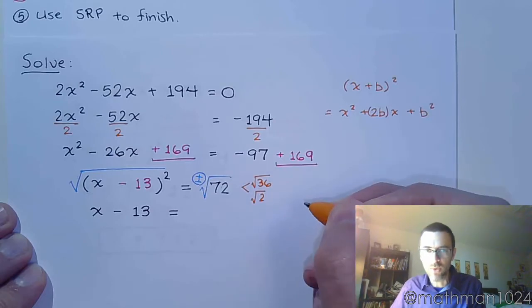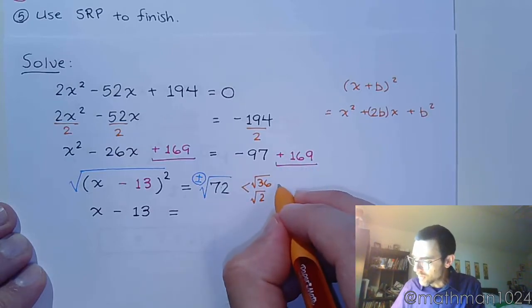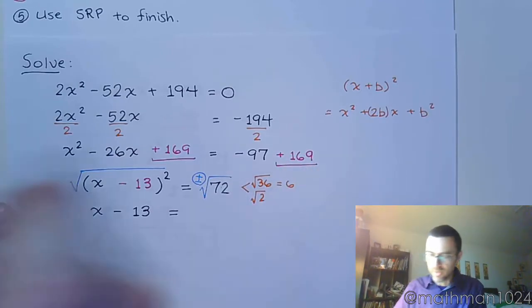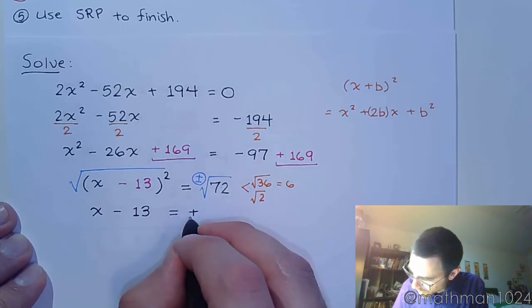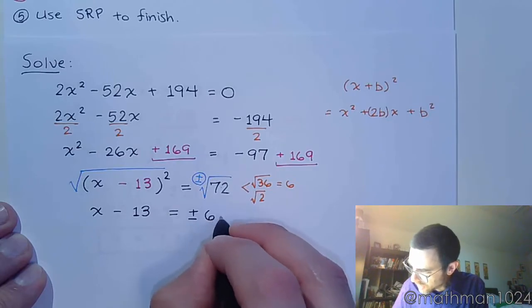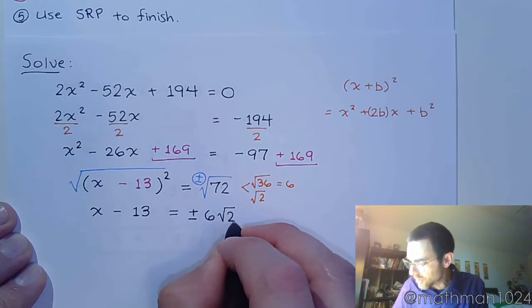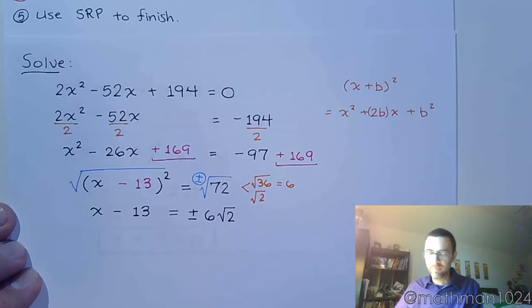Well, 72 will break down as 36 times 2. And again, both of these guys are in square roots. And we know the square root of 36 is 6. So, that's going to aid us to get plus or minus. There's my 6. And the square root of 2 is going to stay as it is. And the final step is to move the 13 to the other side.